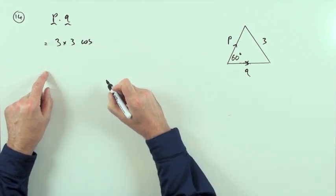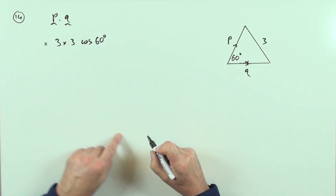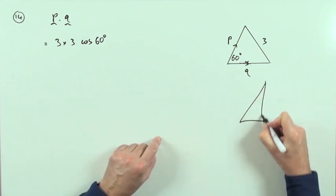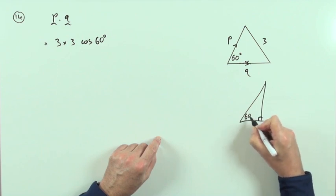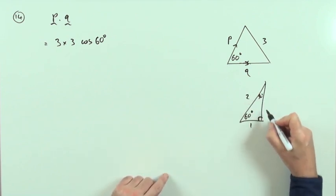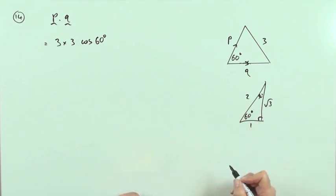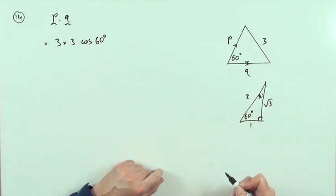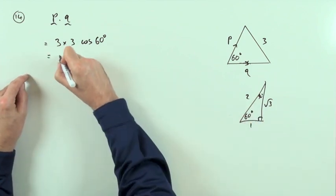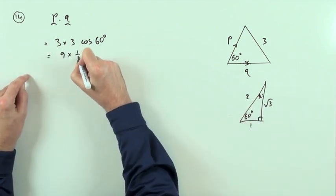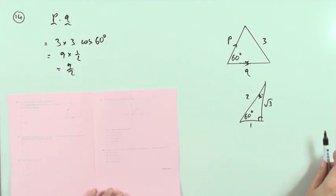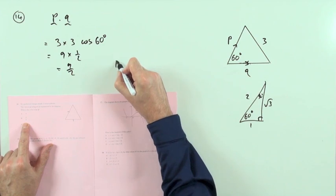So p dot q is the length of p, which is 3, times the length of q, which is also 3, times the cosine of 60 degrees. From the 30-60-90 triangle — sides 1, 2, root 3 — cosine of 60 is the adjacent over the hypotenuse, which is a half. So you've got 3 times 3 times a half: 9 over 2, and that's answer B.